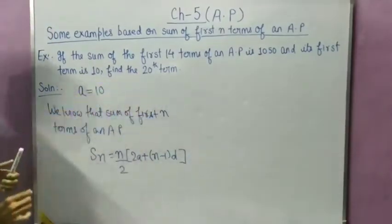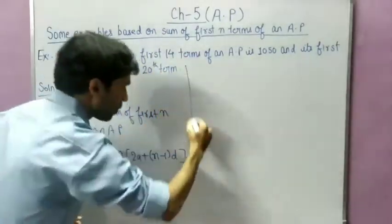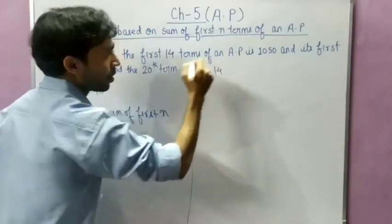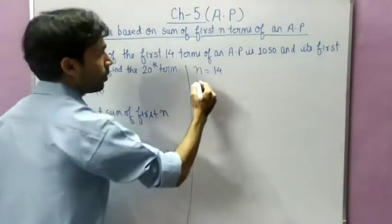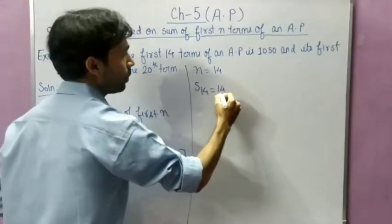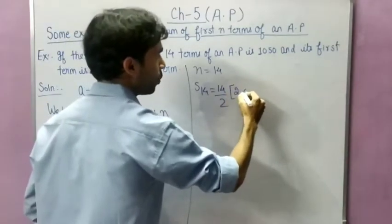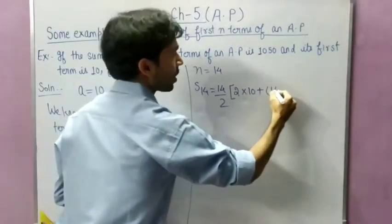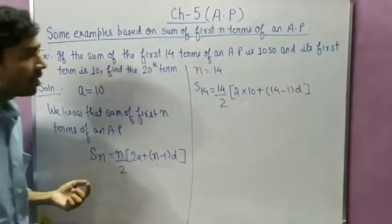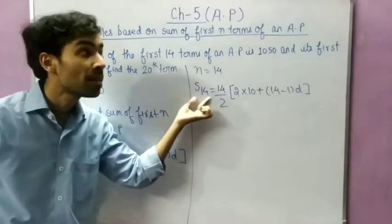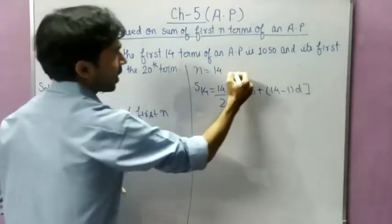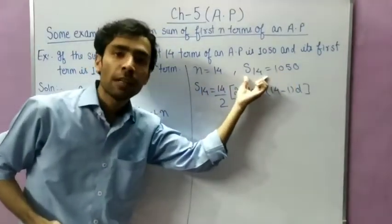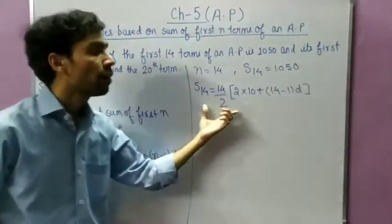In the question, the sum of the first 14 terms is given, so n equals 14. When we put n = 14 in the formula, S14 = 14/2 in bracket 2 into 10 plus (14−1) into D. And S14 is given as 1050. So in place of S14, we can put 1050.